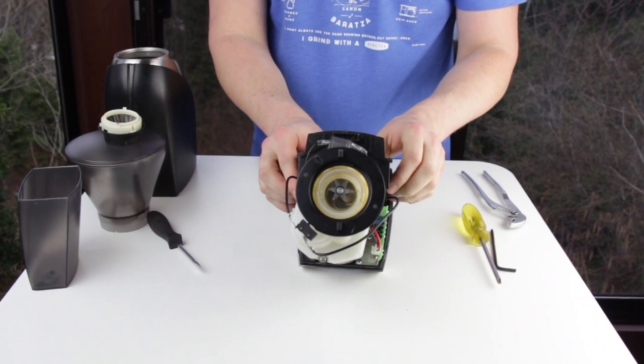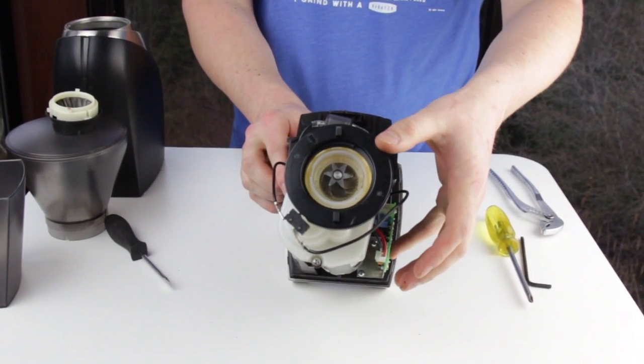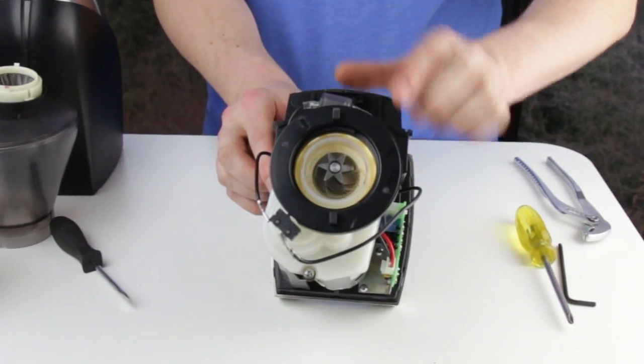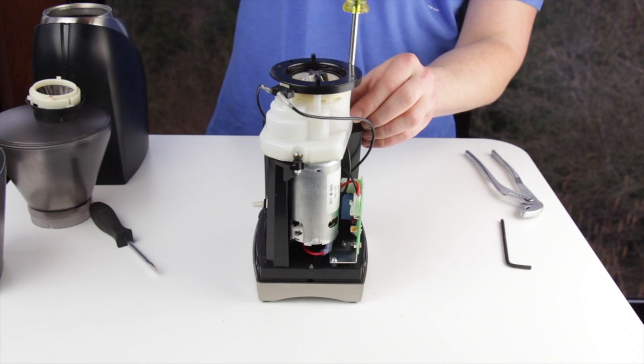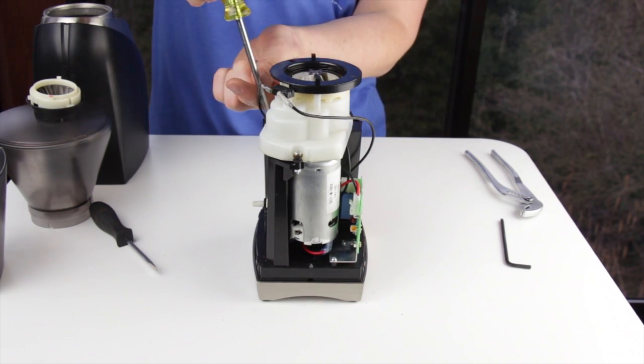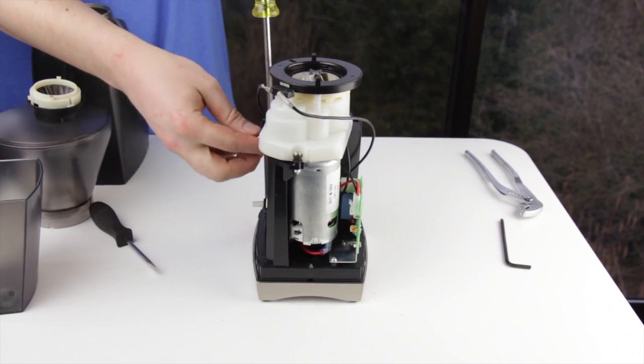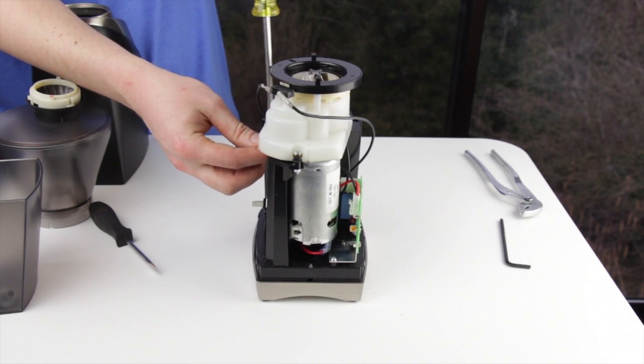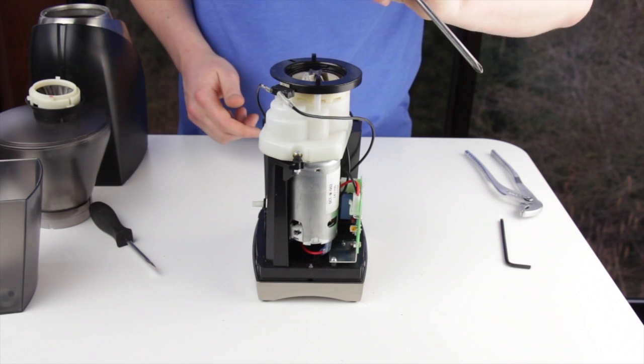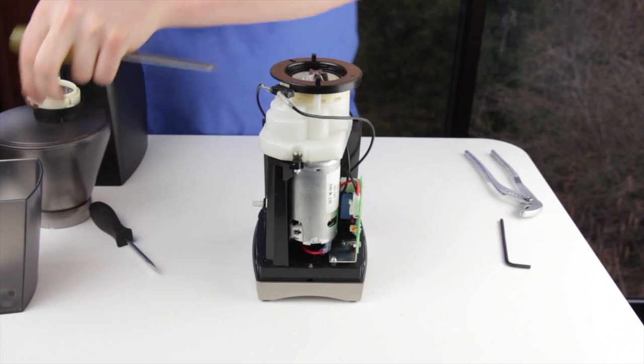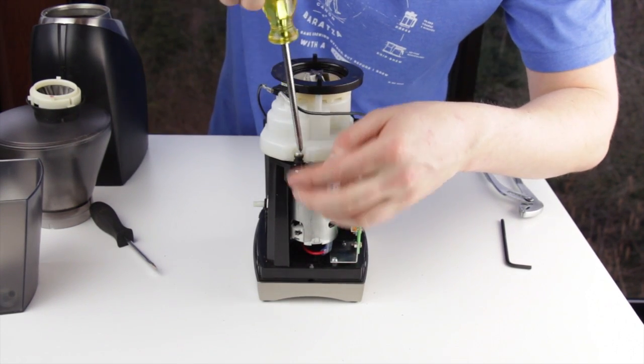Now that the case is removed, we need to remove the gearbox and motor assembly. There are three Phillips screws that secure it. Remove the three Phillips screws that hold the gearbox motor assembly to the black frame. The grinder I'm working on has a small nut on two of the three screws. Your grinder may have a small nut on two of the three screws or it may not.